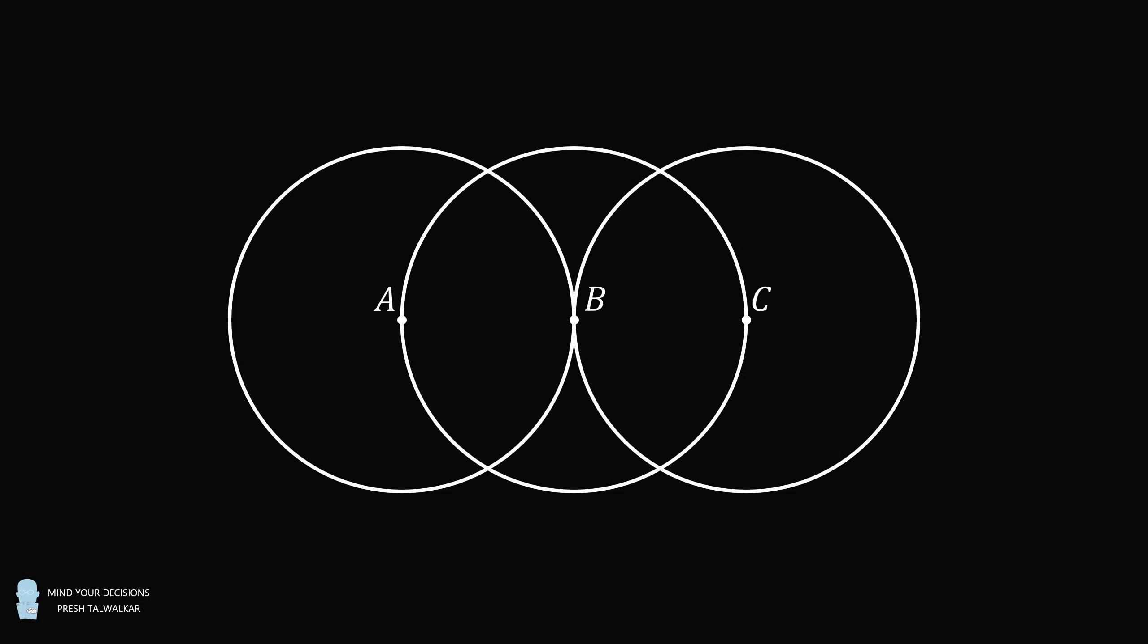Circle B intersects circle A at the points D and E, and circle B intersects circle C at the points F and G.